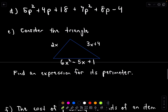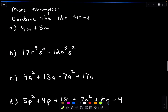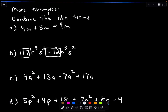Let's do a few more examples, going a bit faster. Combining 4m plus 5m: those are like terms, 4 plus 5 equals 9, so we get 9m. For 17r³s² minus 12r³s²: I've got r to the third and s squared in both. 17 minus 12 is 5, so the result is 5r³s².